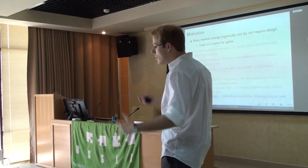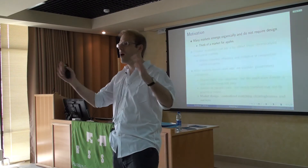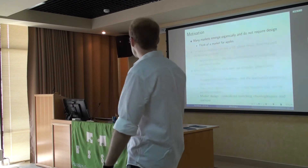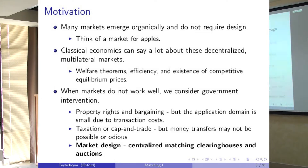Generally, when you start out studying economics, you don't worry about design - you worry about markets. You say, well, markets emerge in a nice organic way. There is supply and demand, and there is a nice equilibrium price. If you think about a market for apples, that's exactly what happens. There are suppliers of apples - farmers - and there are people who buy apples - supermarkets and consumers - and there is a price for each apple. The price allows you to control whether the market is oversupplied or over-demanded, and it goes to some sort of equilibrium.